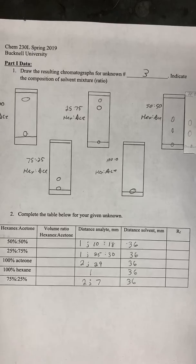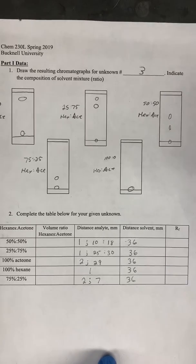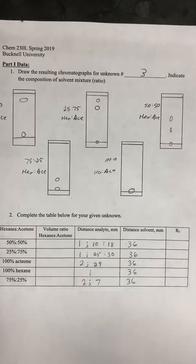So we see here we have our 50-50 hexane to acetone solvent ratio TLC plate, and then I just duplicated it on the handout itself. And so now what we want to do is measure the distance that the solvent traveled up the TLC plate.